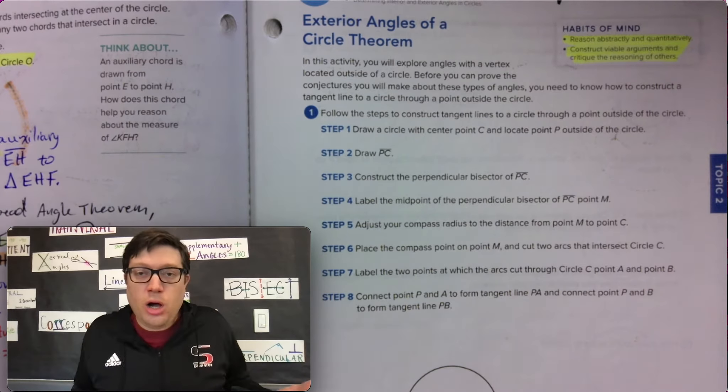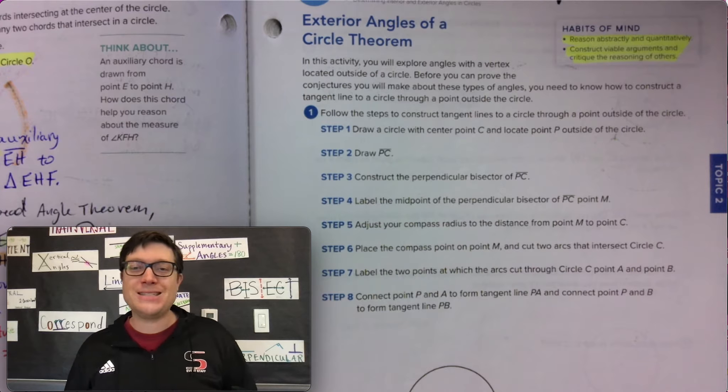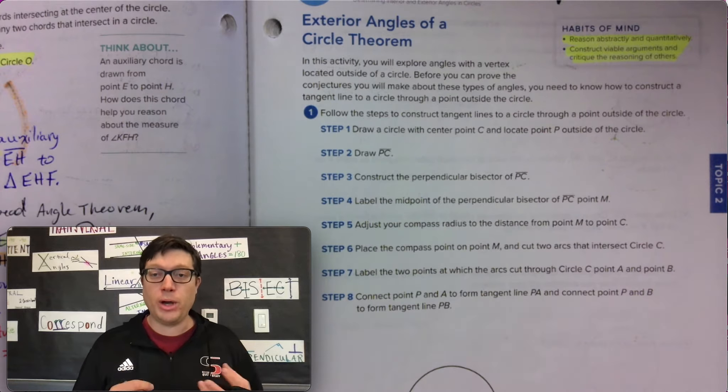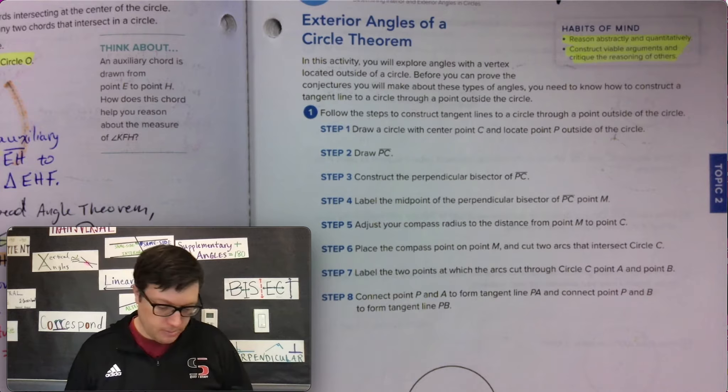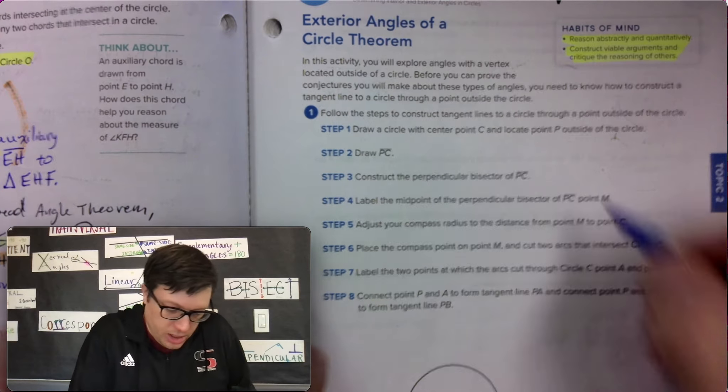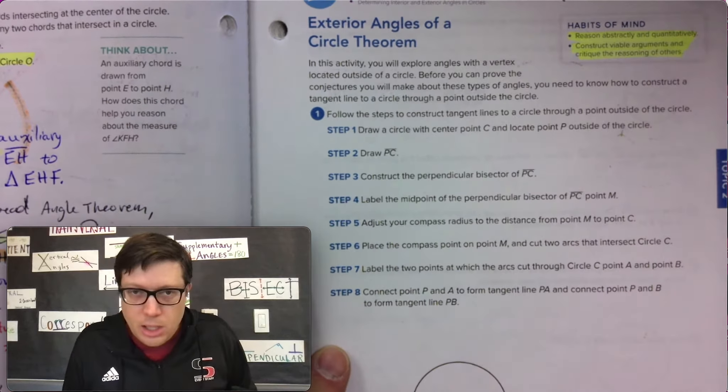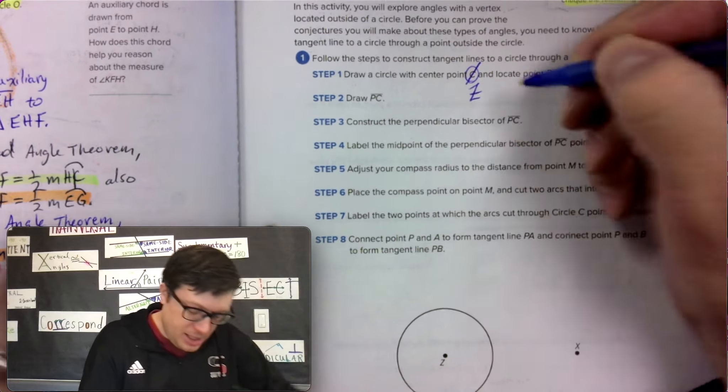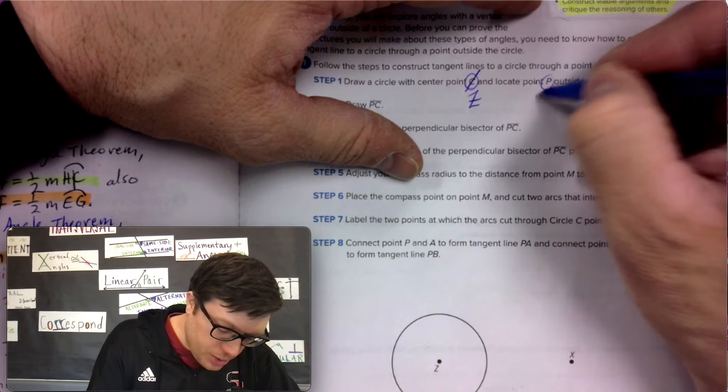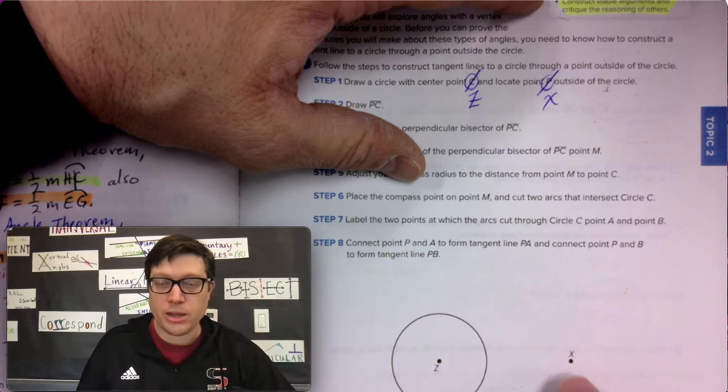So step one, draw a circle with center point C and locate a point outside of the circle. Call it, well, they're going to say call it P, but we have X. Okay, so do a little change here. We're not using C, we're using Z because it's right there. And we're not using P, we're using X because it's right there.